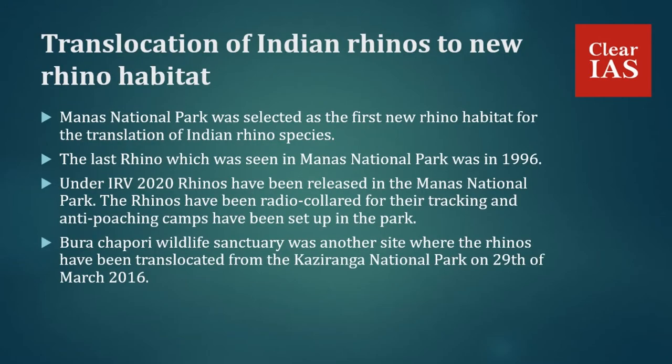Around 80 percent of the Indian rhino population is concentrated in Kaziranga National Park in Assam. Concentrating large numbers in a single protected area exposes them to risks of epidemics, floods, poaching, and other threats. Also, the rhinos in Pobitora National Park have exceeded their carrying capacity and their numbers need to be reduced to avoid rhino-human conflicts.